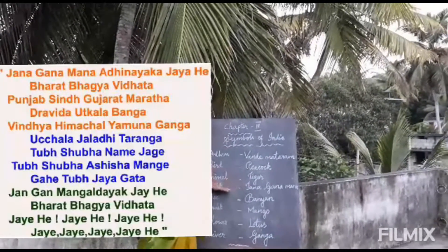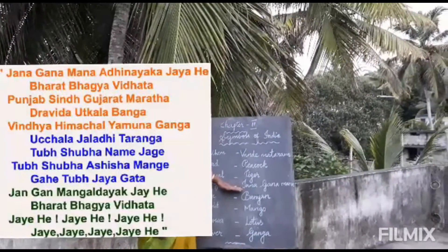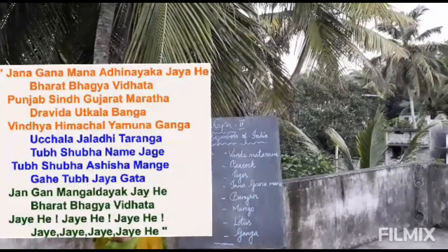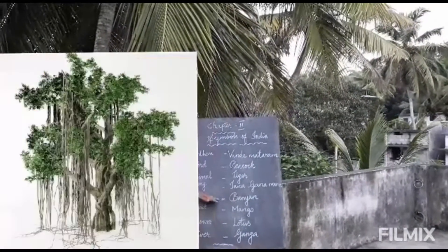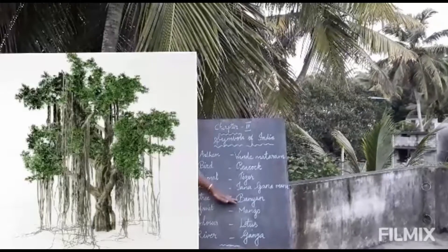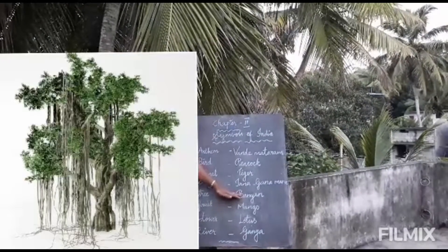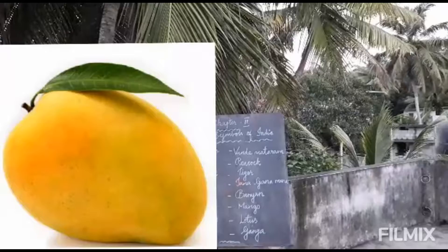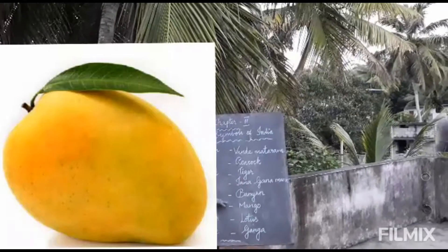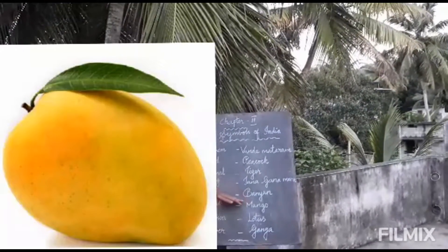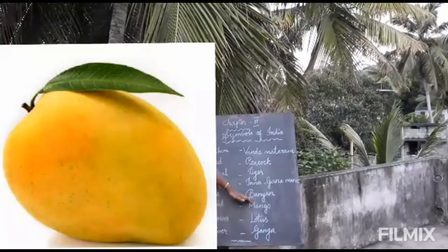Next one, our national zhang. Our national zhang is? Janahanamana. Next one, our national tree. Students, tell the answer. Our national tree is? Banyan tree. Next one, national fruit. Students, tell the answer. Our national fruit is? Manko.